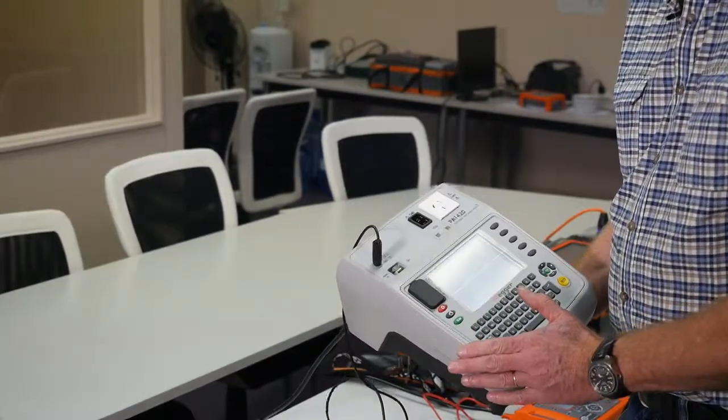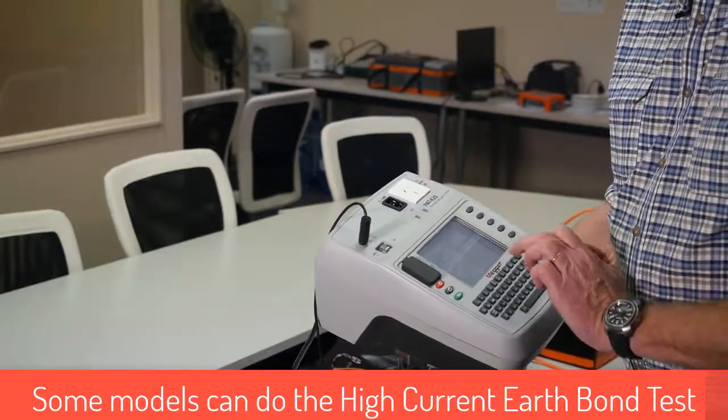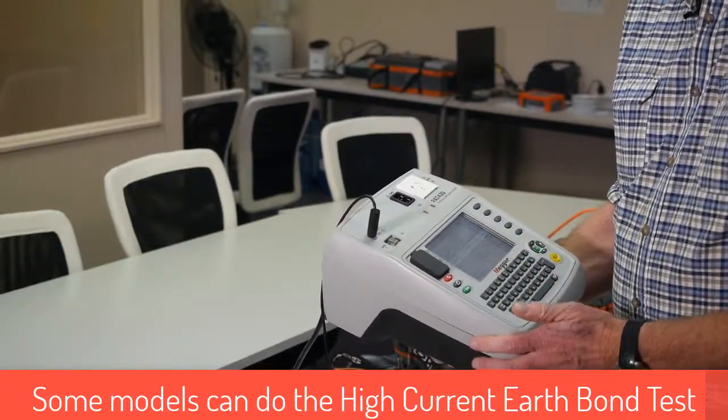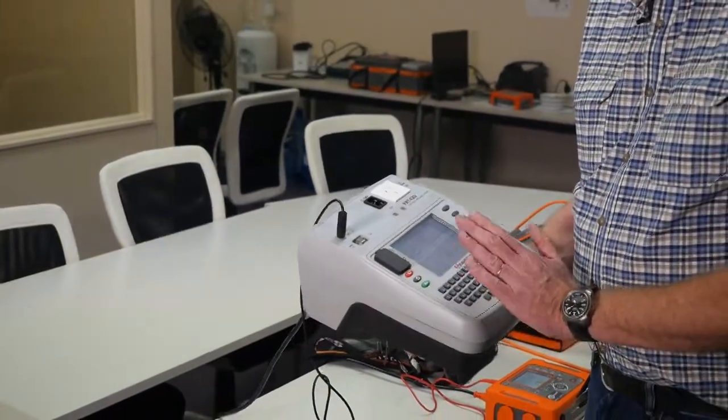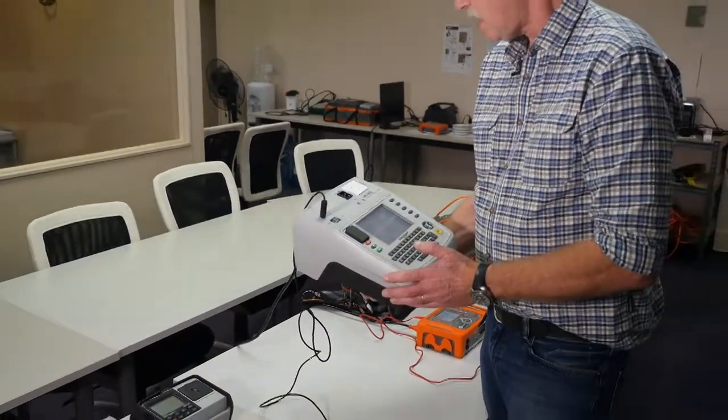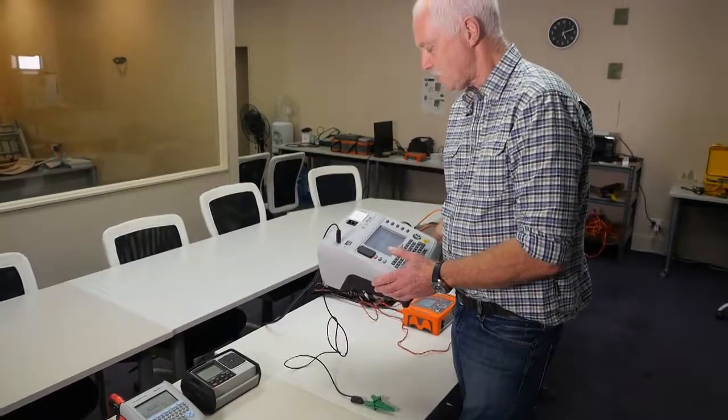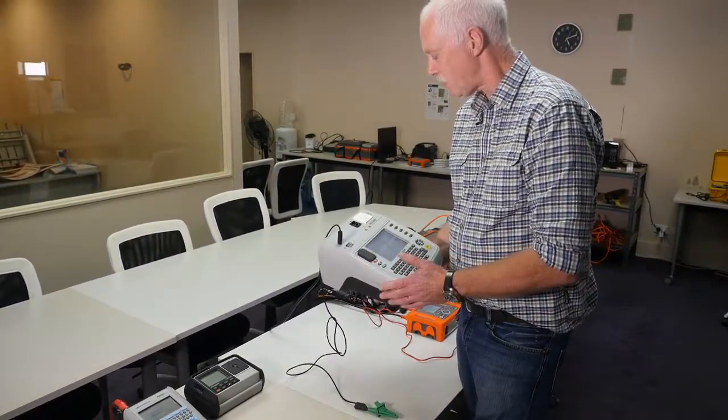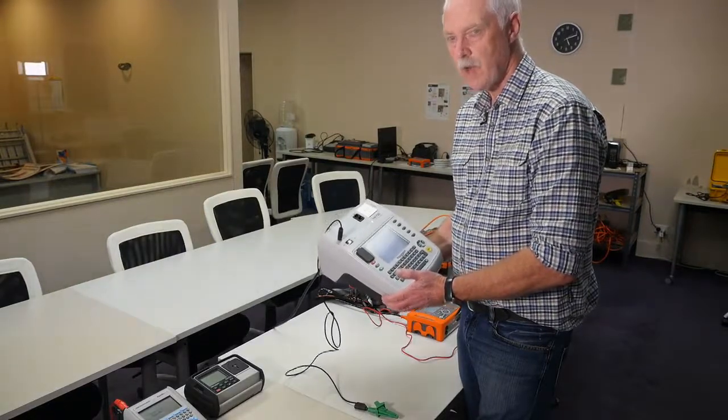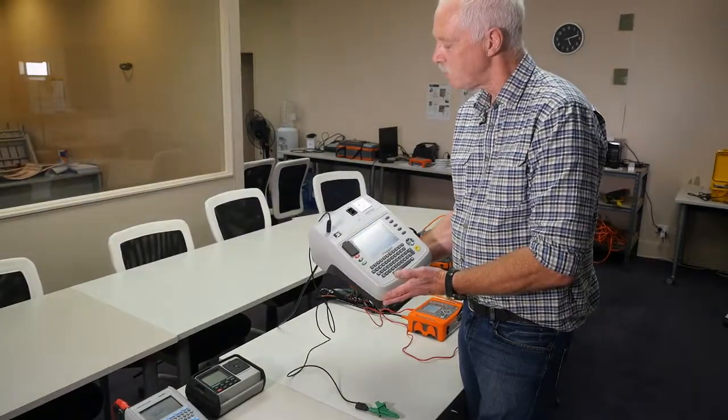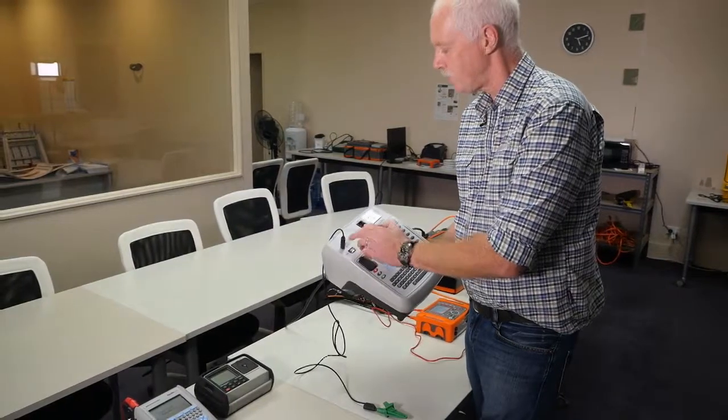This model comes in two different types. So it can do a high current test. Some of the models can, and some of them will only do a 200 milliamp earth bond test. It's got a memory of, I think from memory it's about 15,000 items. And it can do pretty much every test that you need it to do. What it can't do in the low current version, obviously, is a high current earth bond test. But there's two different versions. One has the high current and one doesn't. It looks very much the same. So if you're looking for them, you need to make sure that it says at the top that it can do a 25 amp earth bond.